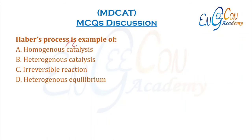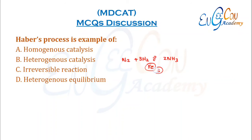Haber's process is an example of which type of catalysis? In Haber's process, nitrogen and hydrogen form ammonia. The catalyst is iron, which is in solid form, while the reactants and products are gaseous. Since the catalyst is in a different phase from the reactants, this is heterogeneous catalysis.